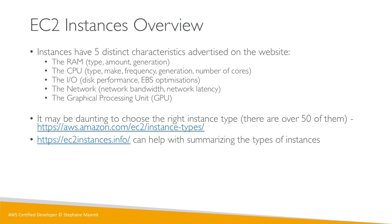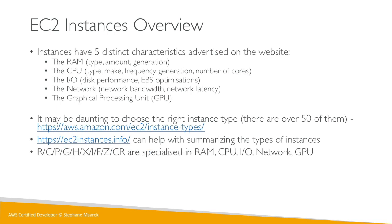The specialized instance families — R, C, P, G, H, X, I, F, Z, and CR — are each specialized in RAM, CPU, IO, Network, or GPU. For example, R instances come with a lot of RAM and C instances come with a lot of CPU. For the exam, don't worry — they don't ask which instance is best for a given RAM/CPU scenario, but as you use AWS you'll get familiar with what each instance type provides.